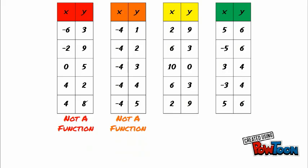The third table is a function. I see the 2 was paired with 9, and later 2 was paired with 9 again. Looks good to me. Six was paired with 3, and then 6 was paired with 3 again. Also looks good to me.